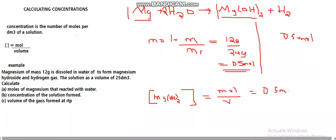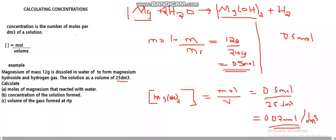So the concentration of magnesium hydroxide: 0.5 moles divided by 25 decimetres cubed equals 0.02 mol/dm³. Remember concentration can be written using the units mol dm⁻³, or you can also write it as 0.02 M (molarity) — it's the same thing.